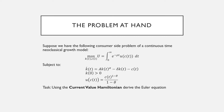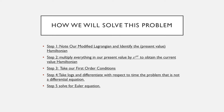Our task is to use the current value Hamiltonian, which is just a transformation of our regular present value Hamiltonian that we were using in the previous two videos. And we're going to derive the Euler equation from that. So to solve this problem: step one, we're going to note our modified Lagrangian and identify the present value Hamiltonian. Step two is that we're going to multiply everything in our present value equation by e raised to the power of ρt to obtain our current value Hamiltonian.